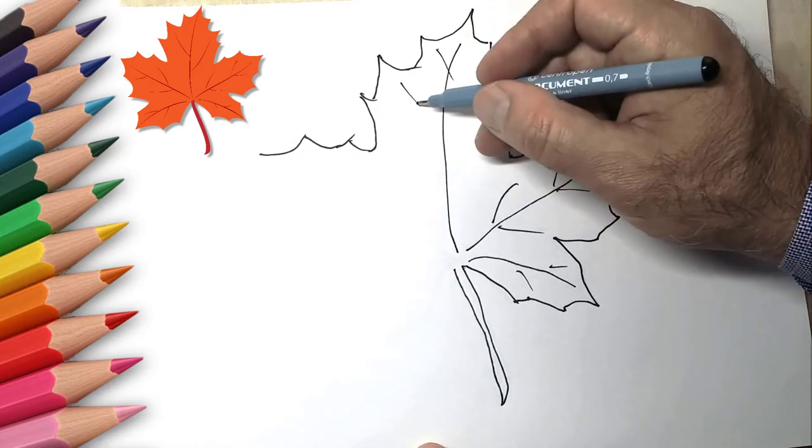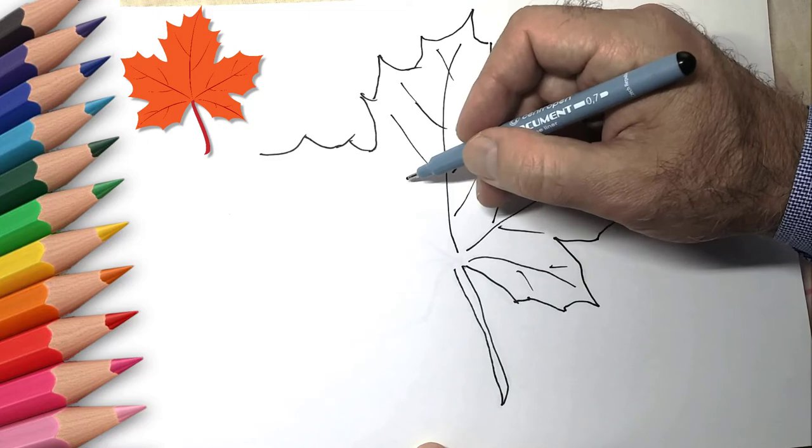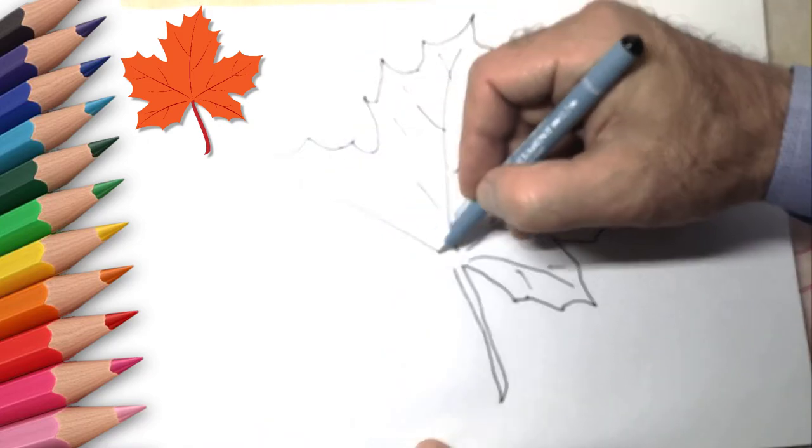Now draw the veins of the leaf, which hold the leaf itself. And draw the tail of the leaf, which attaches the leaf to the maple branch.